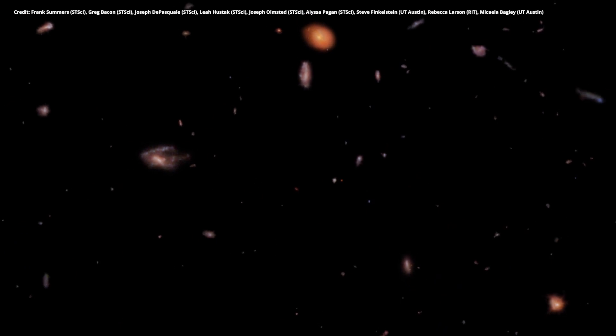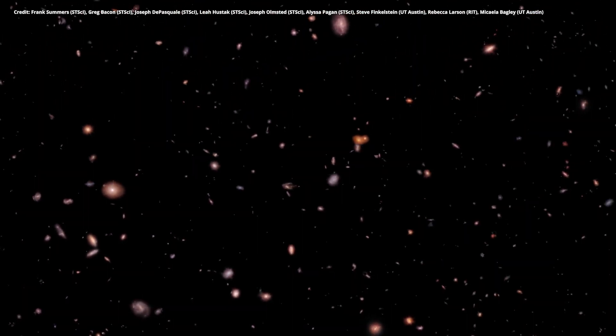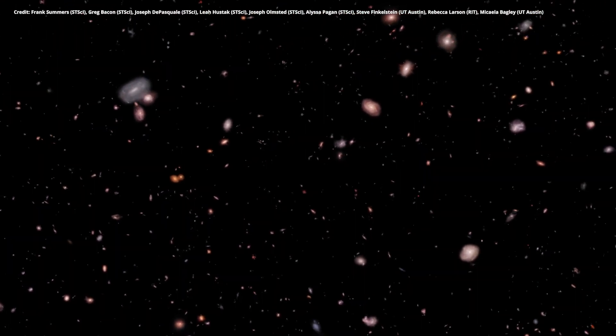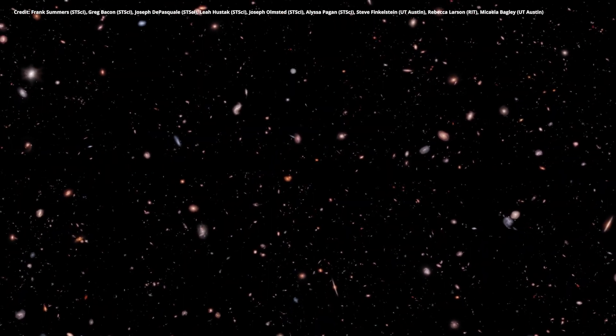One of the oldest galaxies we've found is this orange blob, Maisie's Galaxy, named after the daughter of one of the scientists who found it using the James Webb Space Telescope. Maisie's Galaxy existed 390 million years after the Big Bang. That sounds recent, but it's actually billions of years before the universe came to be as we know it now, over 13 billion years later.